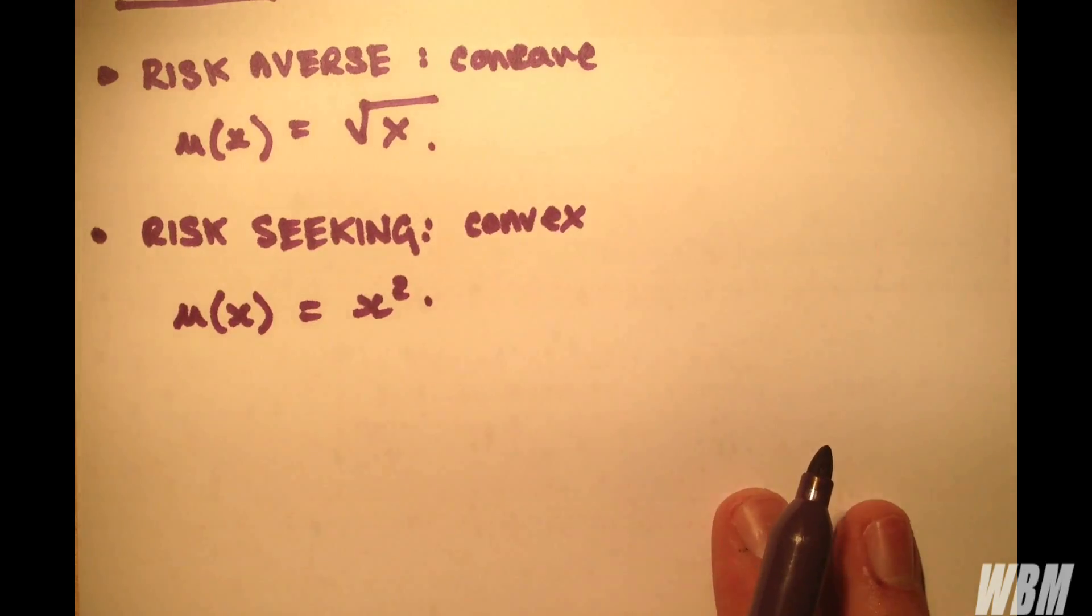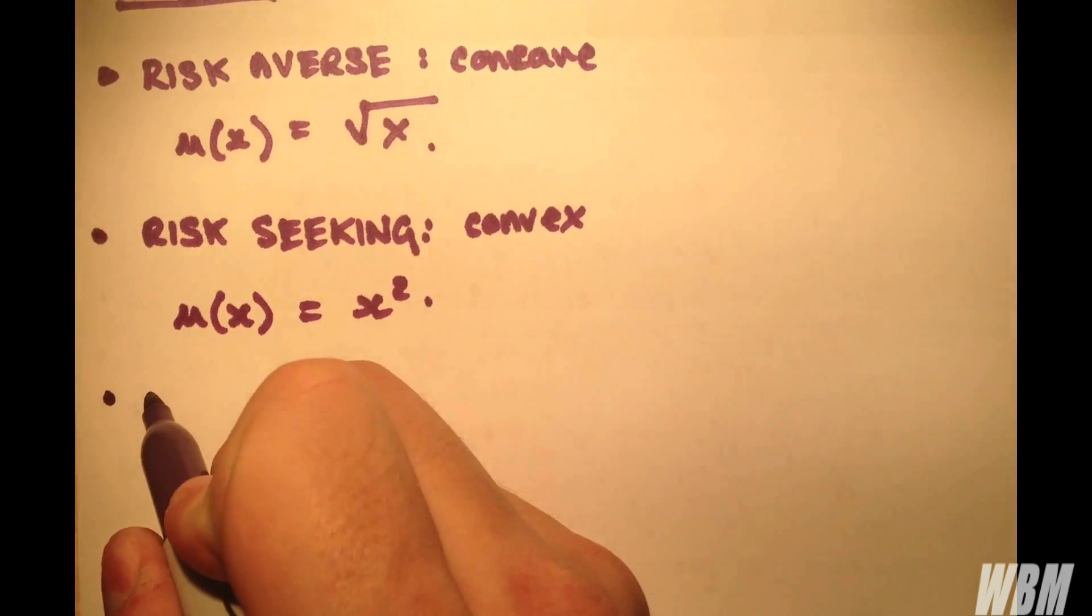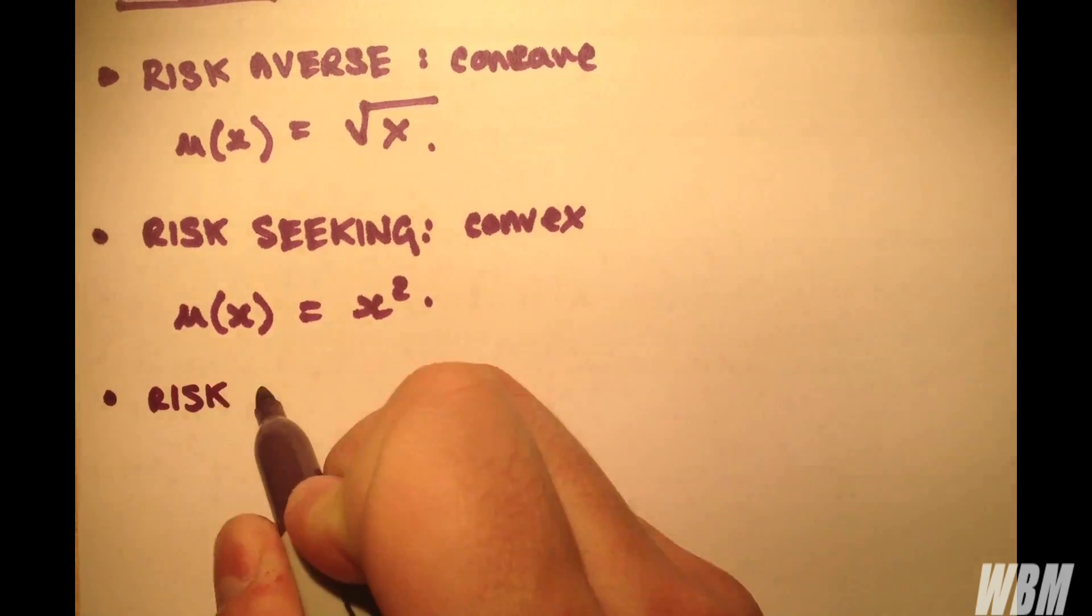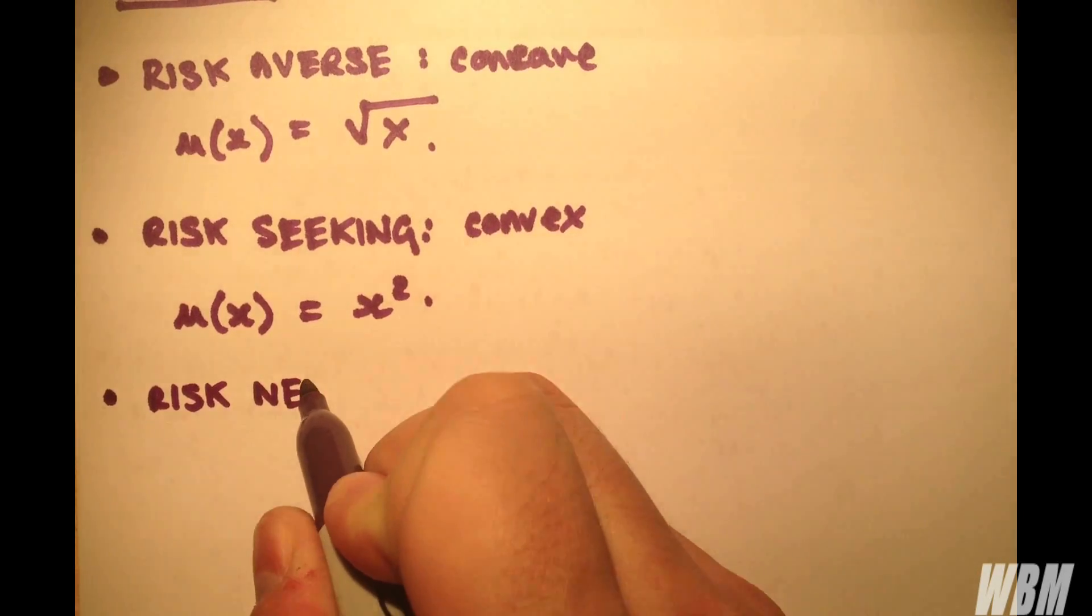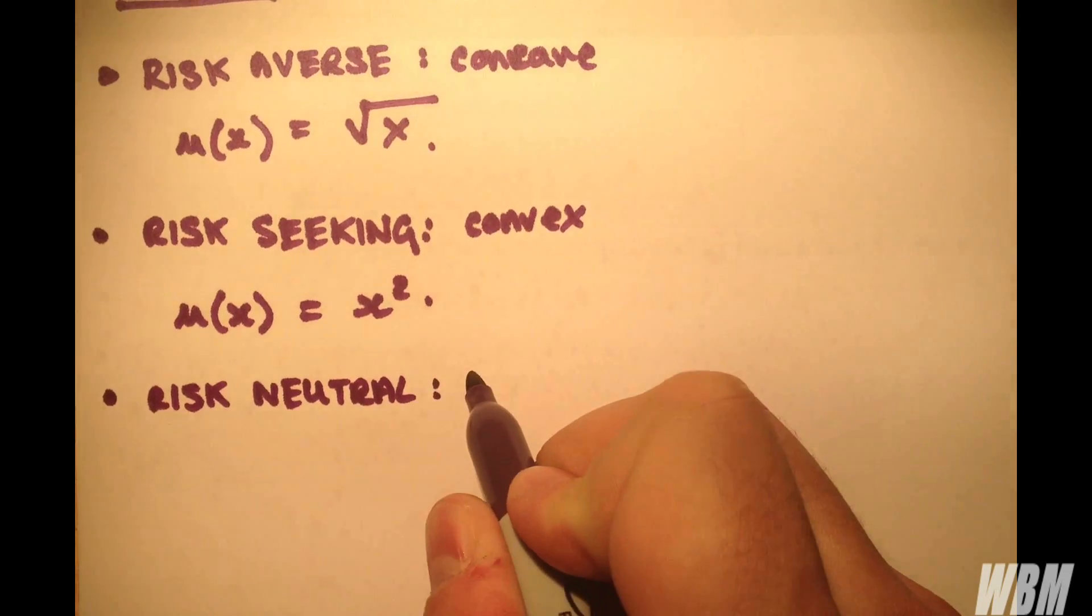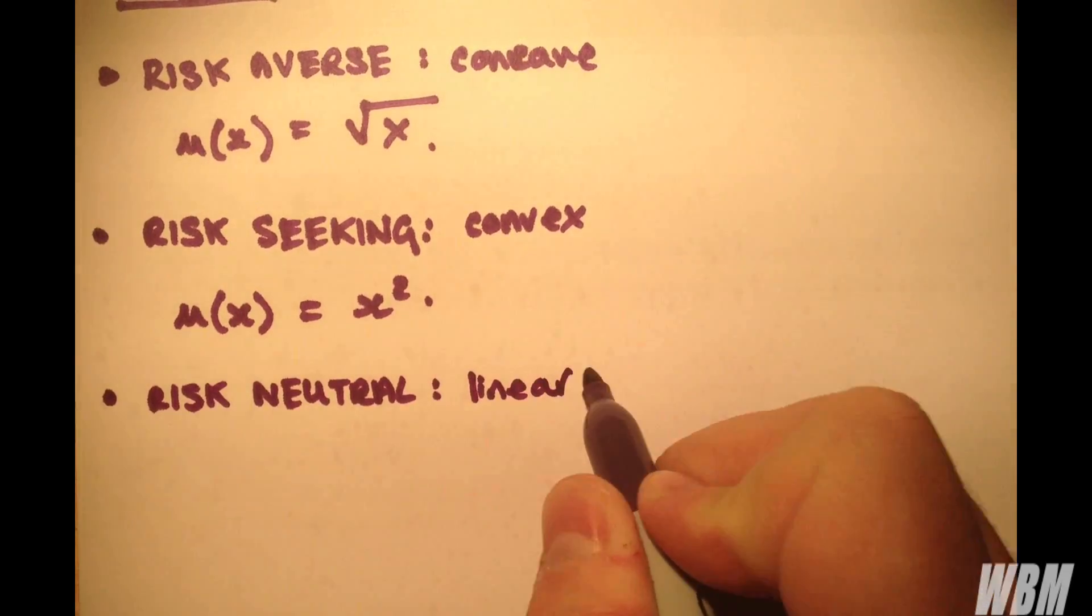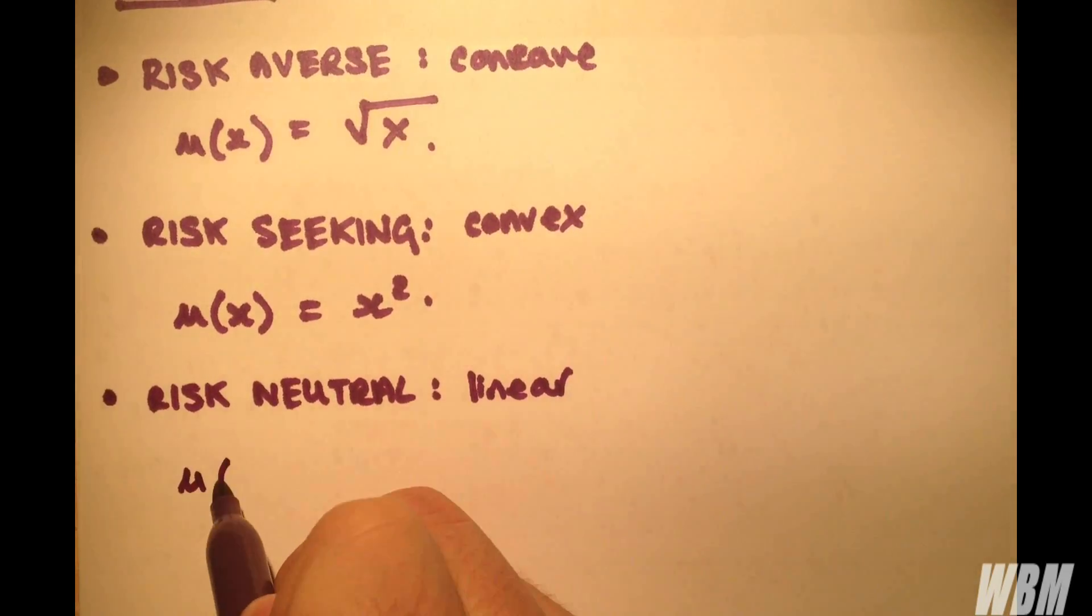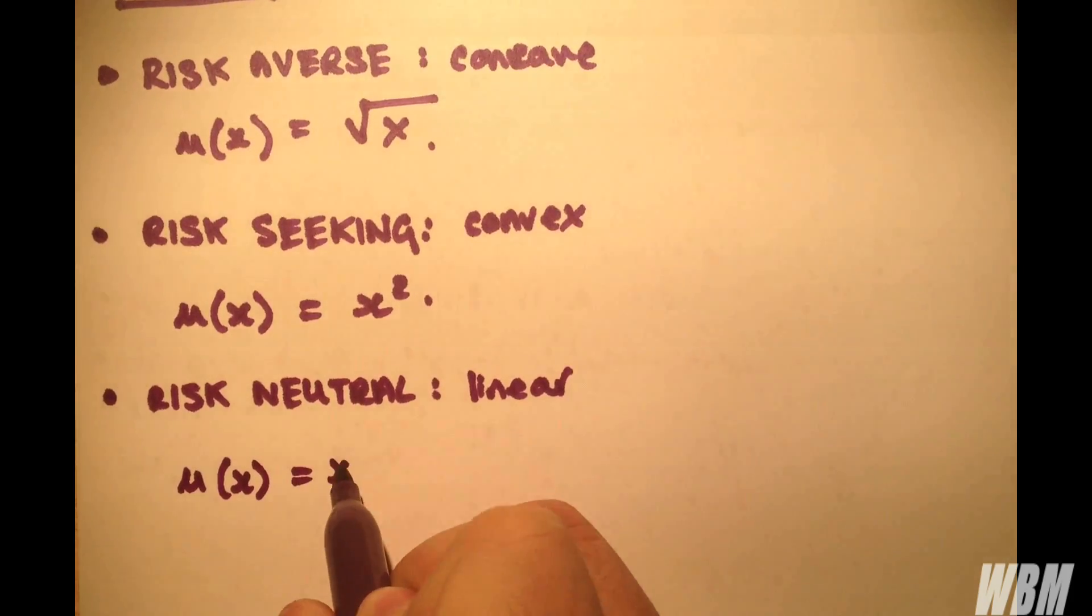And the final type is risk-neutral, which is obviously neither of the above and is linear. And yes, you're right, it's x.